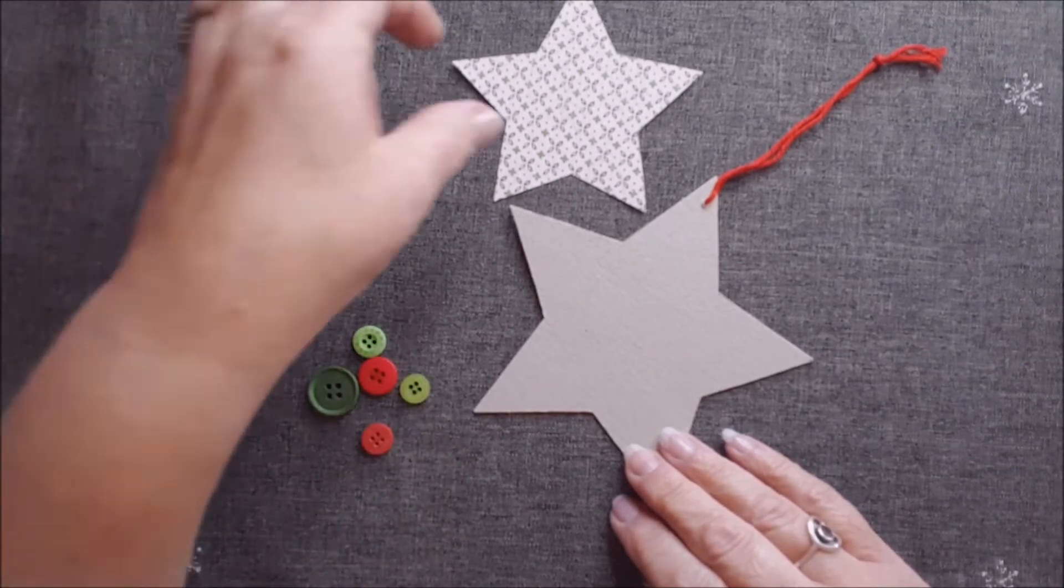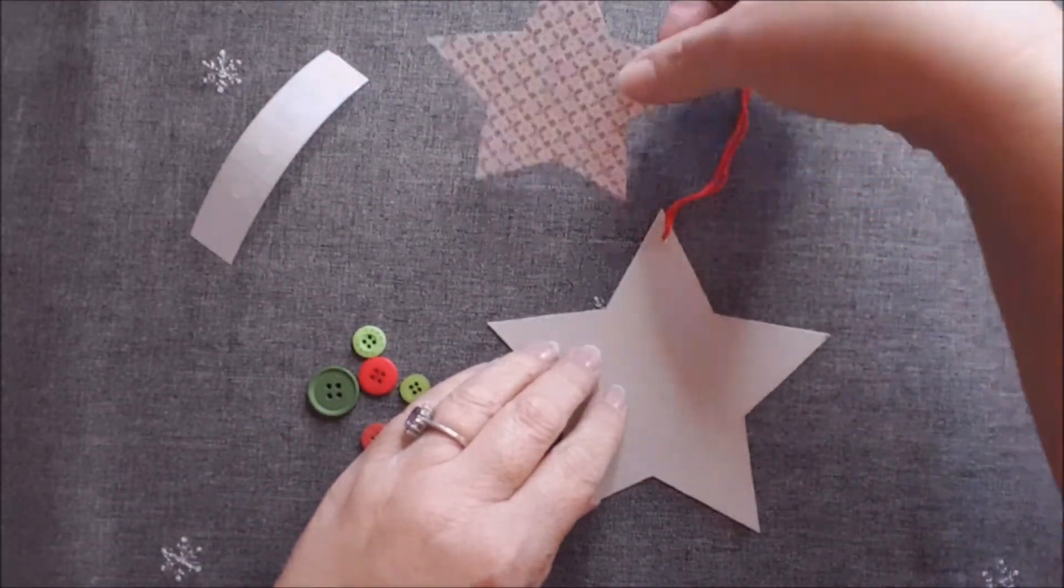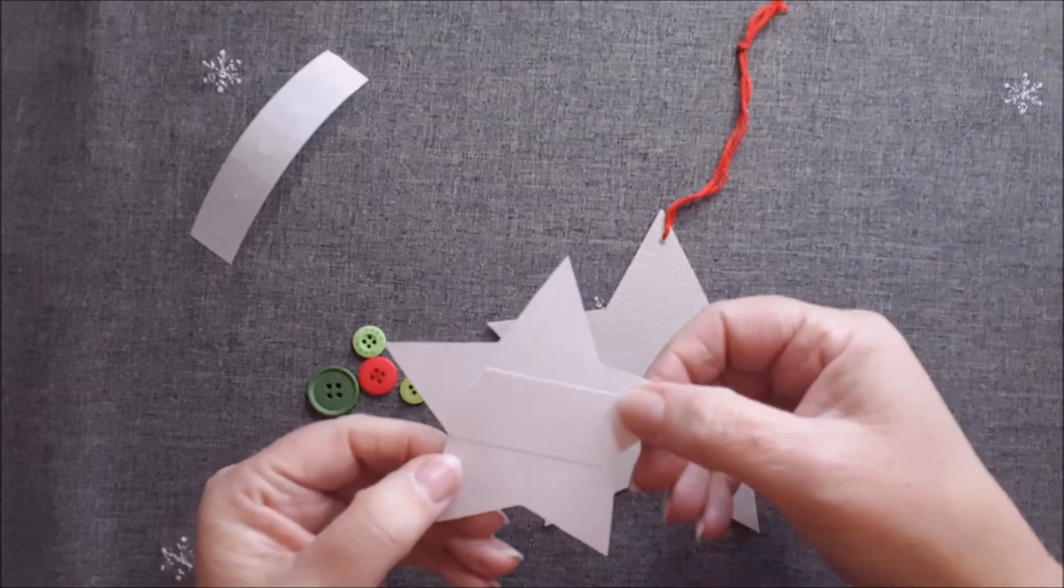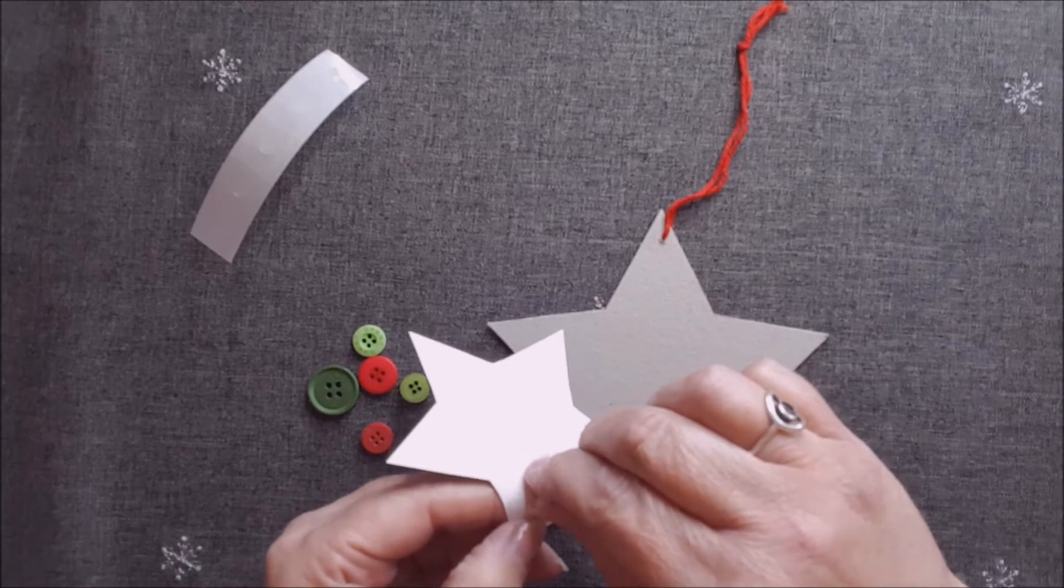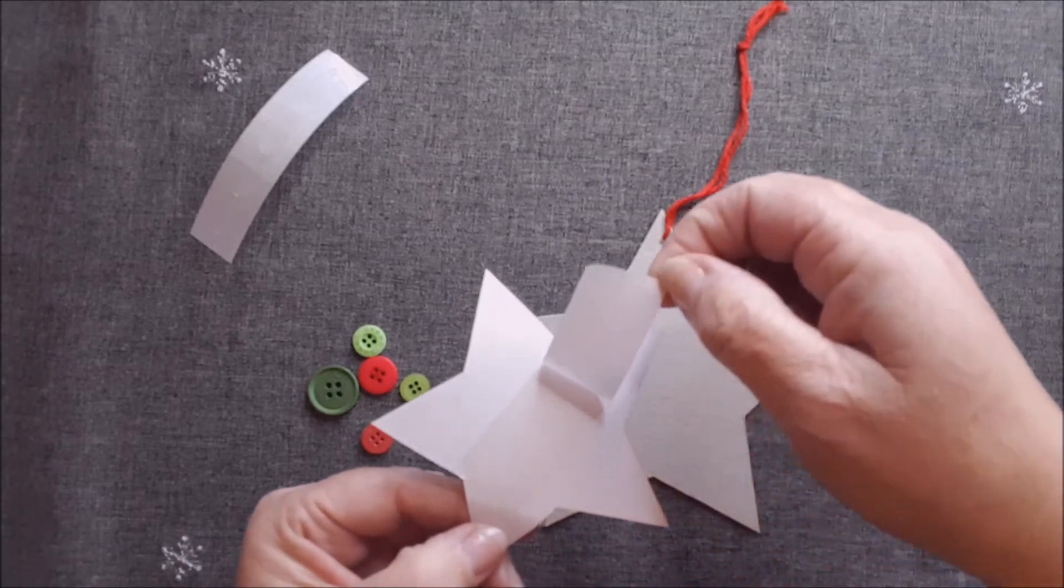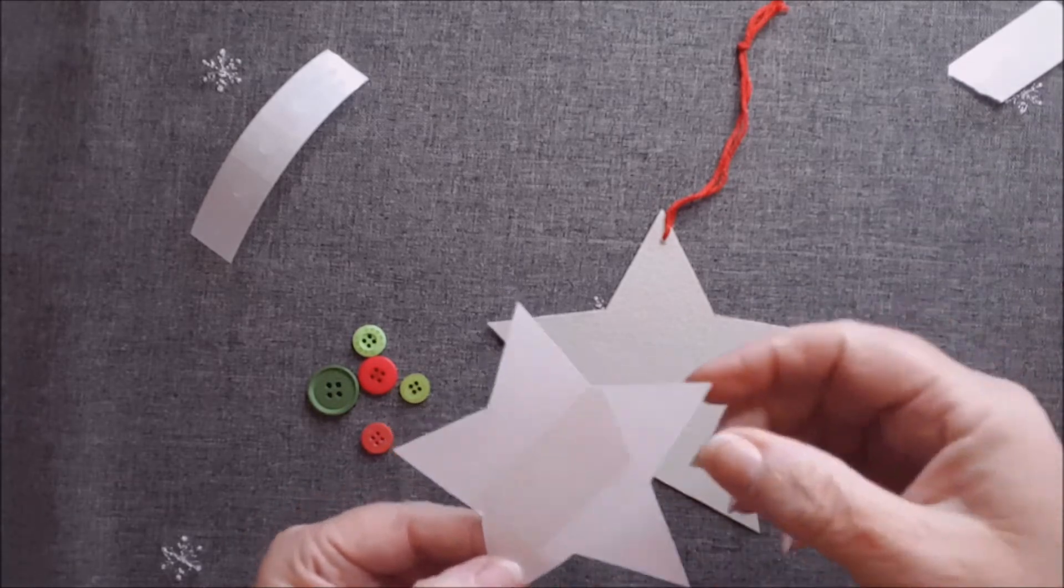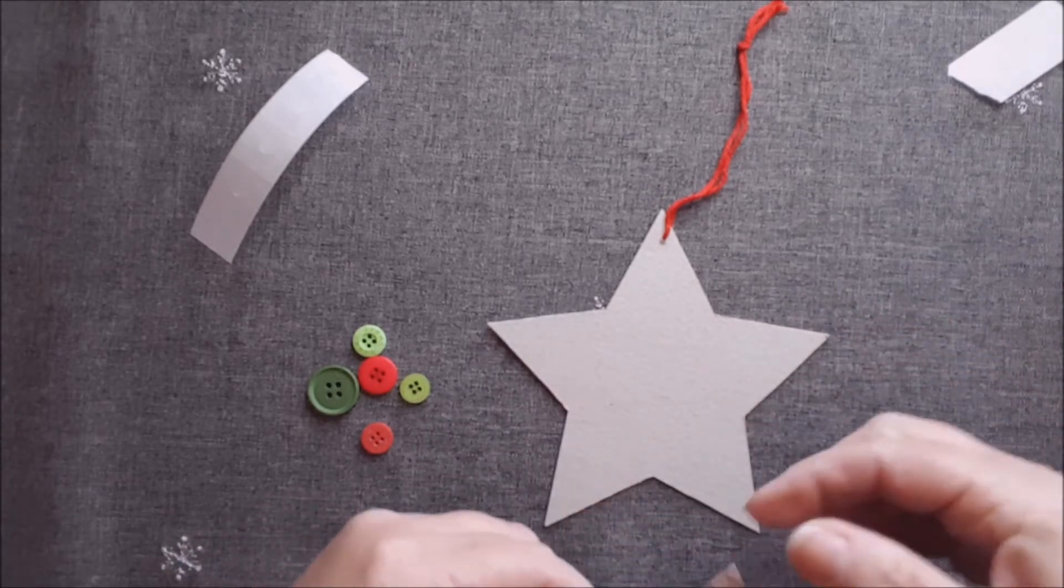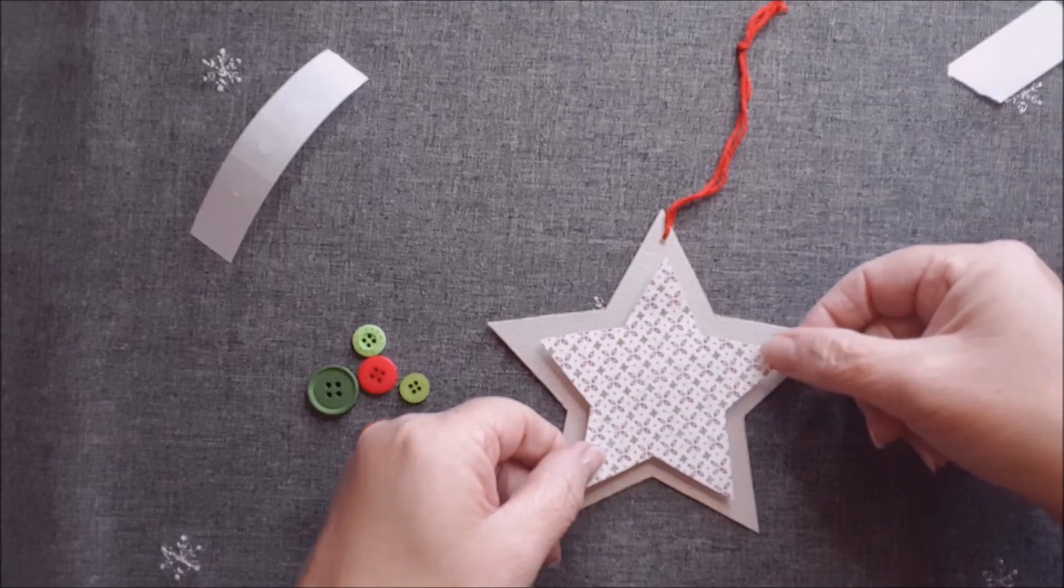So for this one we're going to get our paper star, and on the back you'll see there is a piece of double-sided tape. So we're going to peel off the top layer of our double-sided tape, just leaving the sticky tape on.